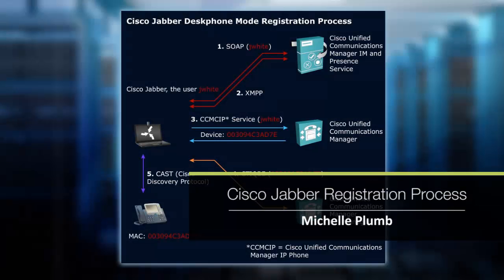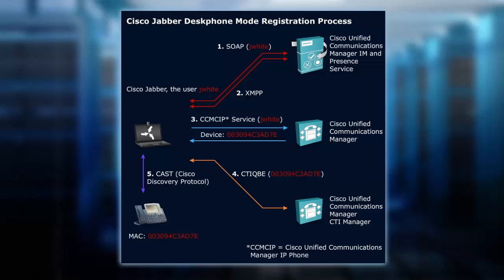Let's look at when a Jabber desk phone mode registration occurs. There's a lot to this. The first thing that happens is we go through a SOAP or HTTP request. When that occurs, we are connecting up to Communications Manager, IM and Presence, and we download some information like a contact list, client profiles, any kind of user settings, and preset information. That's all occurring with SOAP over HTTPS.